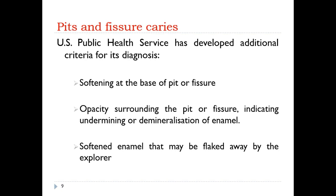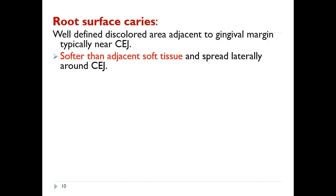The US Public Health Service developed additional criteria for pit and fissure caries diagnosis: softening at the base of a pit or fissure, opacity surrounding the pit or fissure indicating undermining or demineralization of enamel, and softened enamel that may be flaked away by the explorer. Root surface caries are well-defined discolored areas adjacent to the gingival margin, typically near the CEJ, and are softer than adjacent tooth structure.